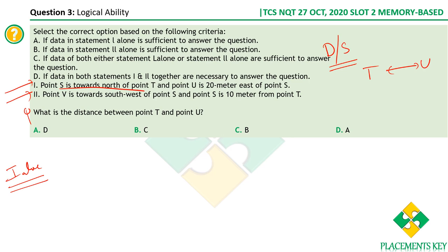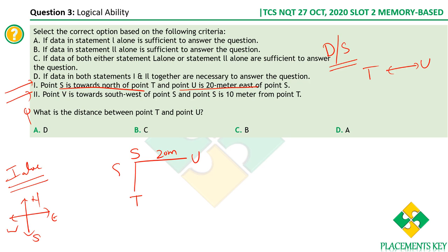From statement one: point S is to the north of point T, and point U is 20 meters east of point S. We know where U is relative to S, but we don't have the distance between S and T. Therefore we can't find the distance between T and U, so statement one alone is insufficient.